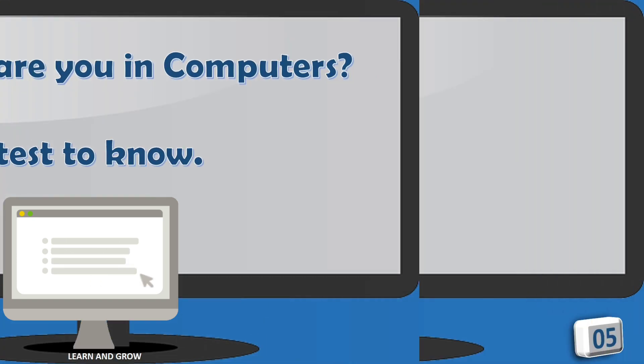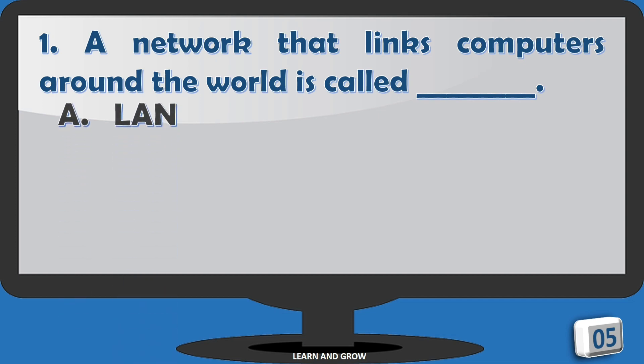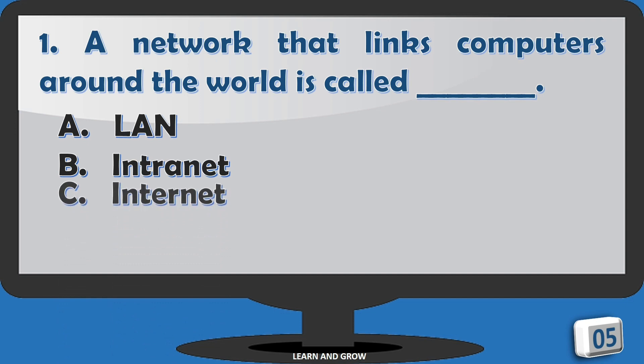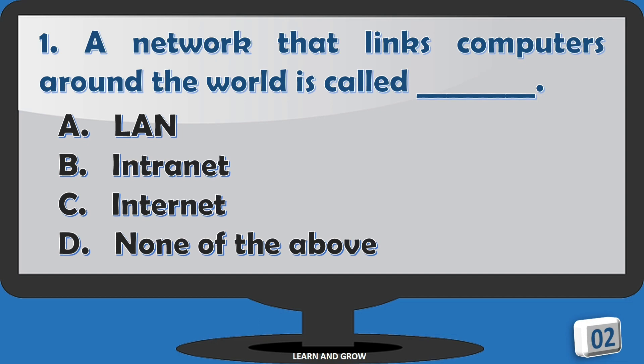Take the short quiz to find out. A network that links computers around the world is called: A. LAN, B. Intranet, C. Internet, D. None of the above.